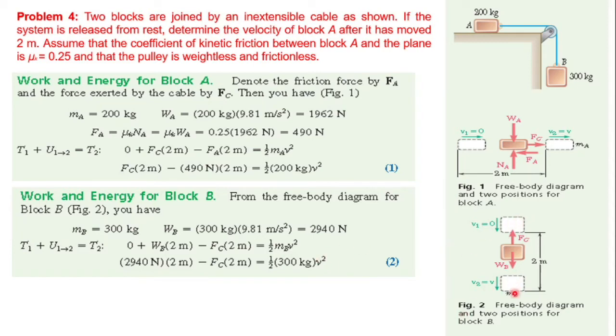Block B moves downward, so the force Fc acts upward and weight acts downward. Since the block moves downward, weight does positive work and Fc does negative work. So we have W times 2 minus Fc times 2 equals half mV squared. This is equation 2.